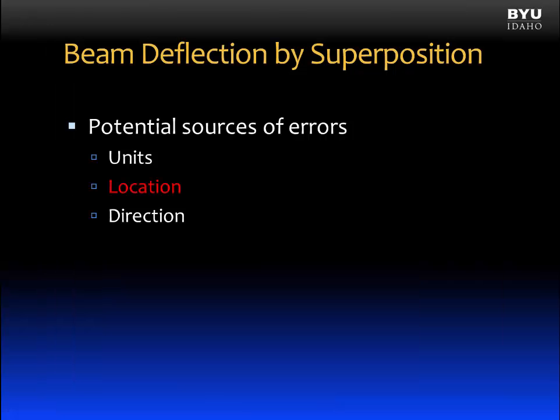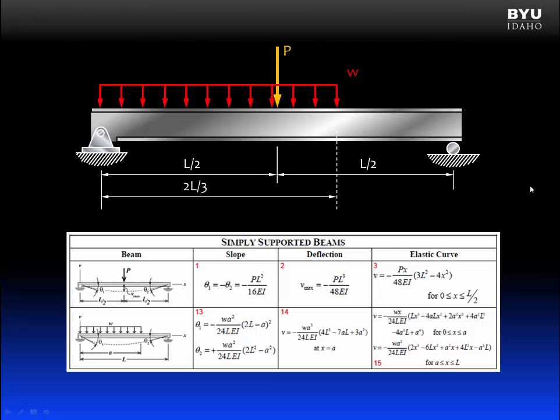Another potential source of error has to do with the location of the deflection that is being calculated. Consider this beam shown as a simply supported beam with a partial distributed load and a point load. If we were interested in finding the maximum deflection in this beam, we would go to the deflection tables and find these two rows of information that match the two different loads on our beam. Under a single point load, we see that the maximum deflection occurs right below that point load.